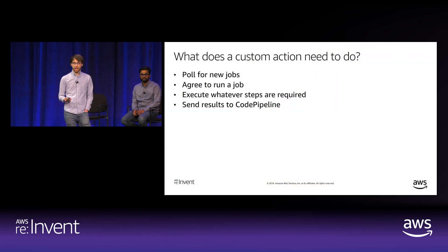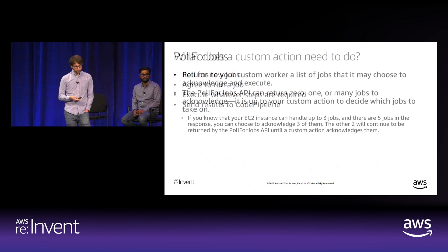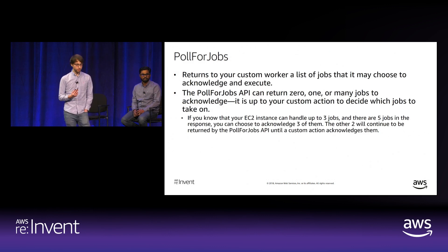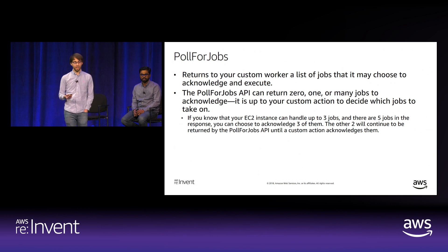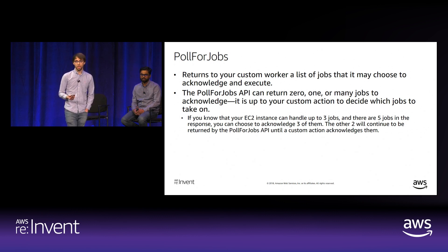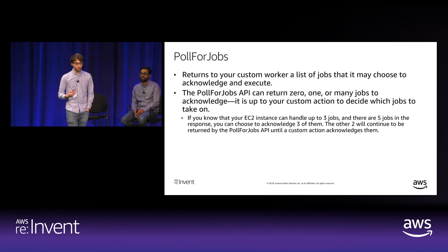When implementing the custom action worker code, you poll for new jobs, agree to run a job, execute the required steps, and send results back to CodePipeline. The PollForJobs API can return zero, one, or many jobs—it's up to your custom action to decide how many to acknowledge. If your instance can handle up to three jobs and five are returned, you can acknowledge three; the other two remain available for other workers.